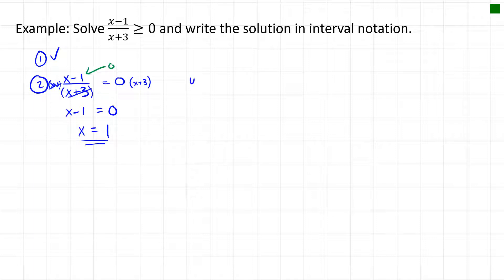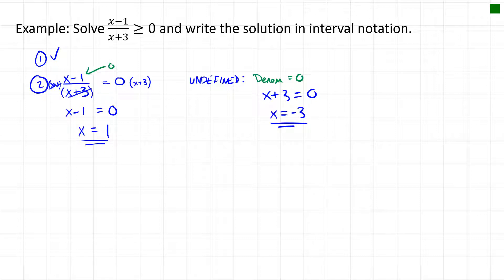The second critical point is where the expression is undefined — where the denominator equals zero. Setting x + 3 = 0 gives x = −3. You're not allowed to divide by zero, so x = −3 is our second critical point. Now we sketch a number line and place −3 and 1 on it.